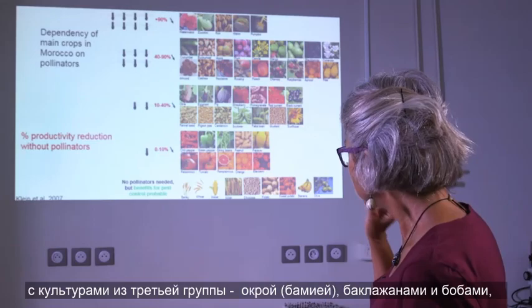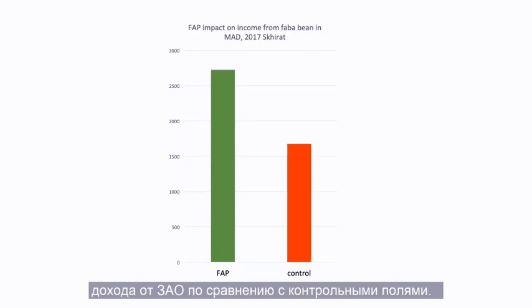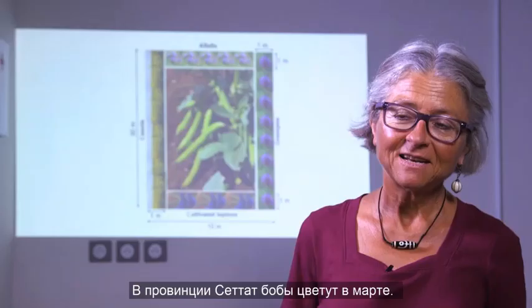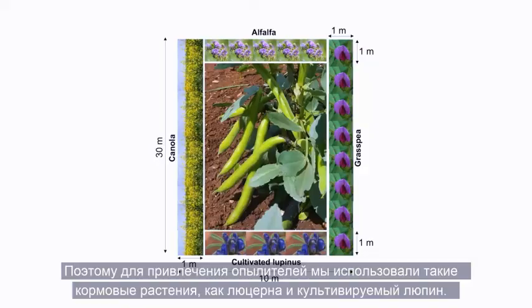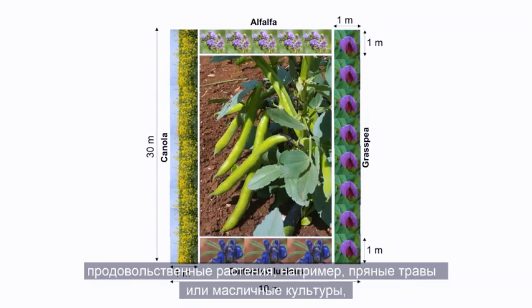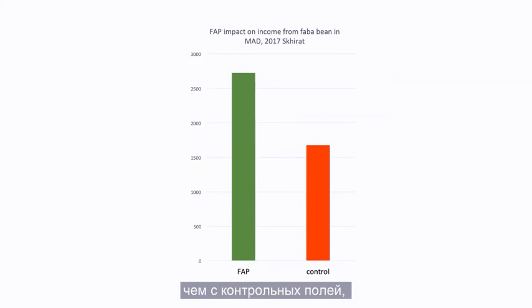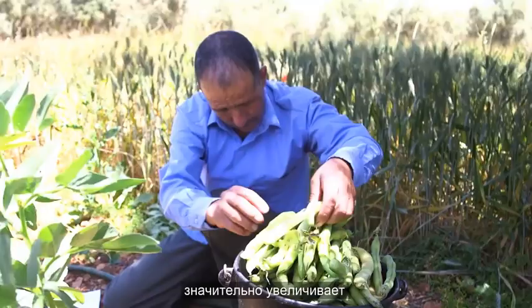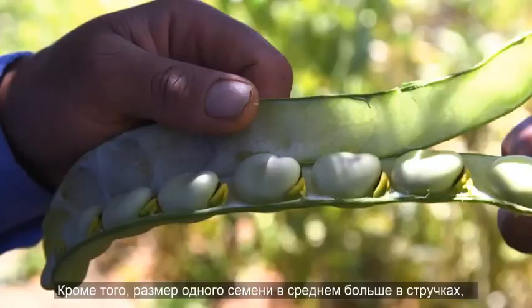We tested FAB in Morocco also with crops from the third group — okra, eggplant, and fava bean — for several years, and had very high income increase in FAB compared to control. In the Settat region, fava bean flowers in March when no high-income habitat enhancement plants are available, so in the field sketch we used forage plants like alfalfa and cultivated lupin. The farmers prefer food crops or spices or oilseeds because they give much higher income. Anyway, FAB fields had much higher income than control fields. Cross-pollination significantly increases the number of seeds per pod, and seeds are bigger from FAB fields on average — very important for farmers who sell dry beans.